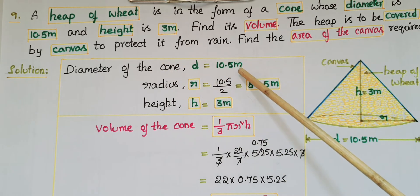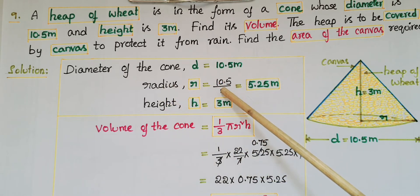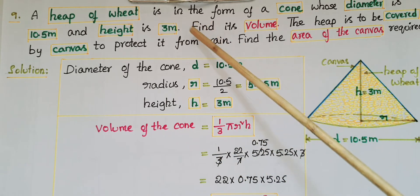Given that diameter of the cone d = 10.5 meters, so radius r = diameter/2 = 10.5/2 = 5.25 meters. Height h = 3 meters. First, we need to find its volume.